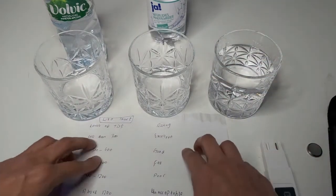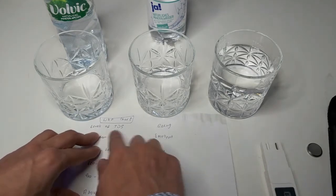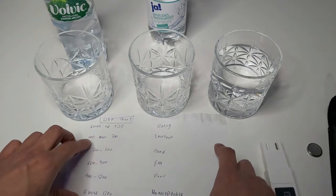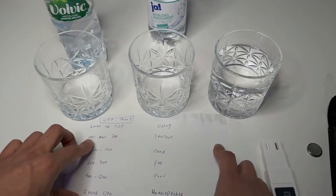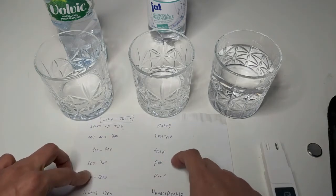So here we have the chart by WHO. Here we have levels of TDS and here we have readings or ratings. If the reading is less than 300, then it is excellent. If it is 300 to 600, then good. 600 to 900, then fair. 900 to 1200, then poor. Above 1200, then unacceptable.